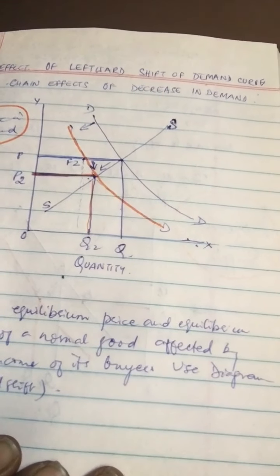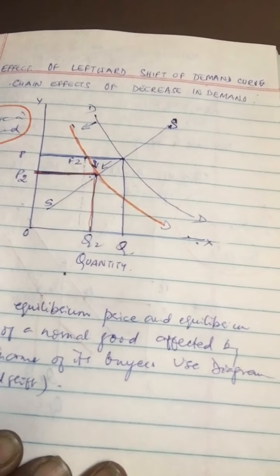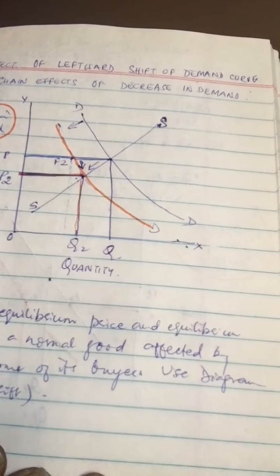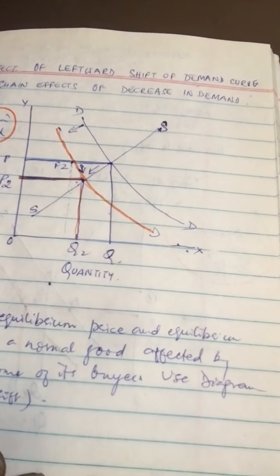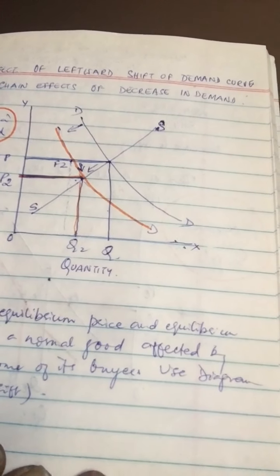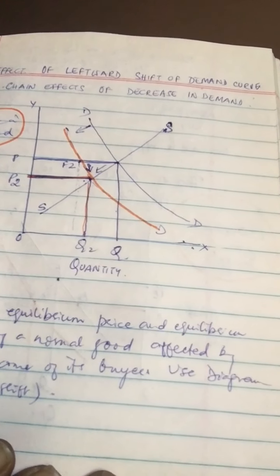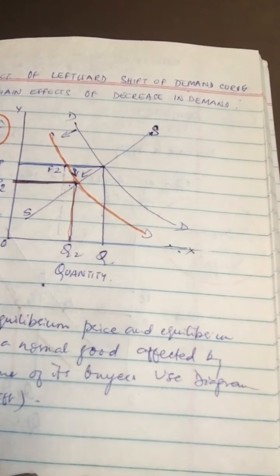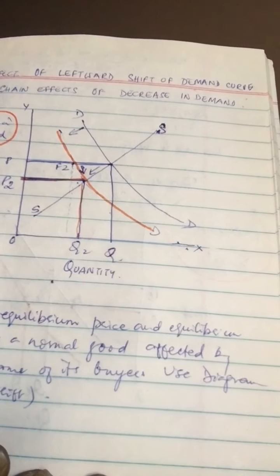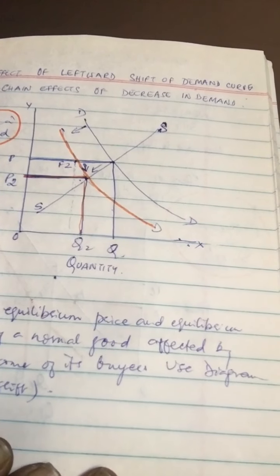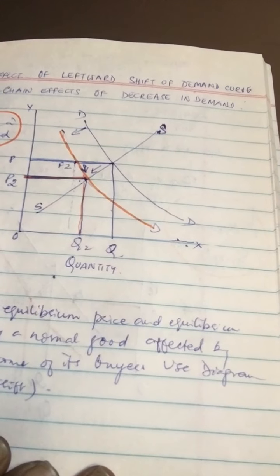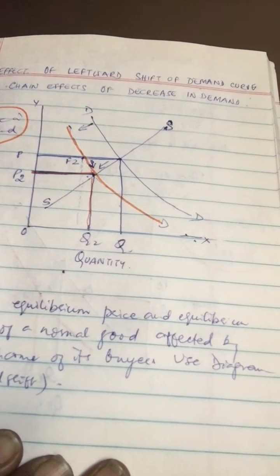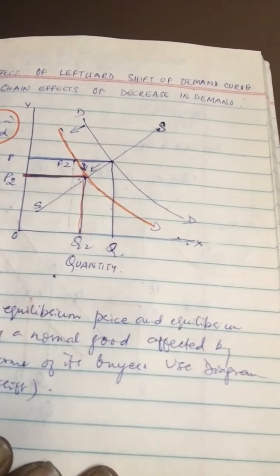Since firms will not be able to sell all they want to sell, there will be competition among sellers leading to a fall in price. As the price falls, demand starts rising along D2D2 and supply starts falling along the supply curve, as shown by the arrows. There will be a series of expansions and contractions, and this change will continue till demand and supply are equal at the new equilibrium point E2.